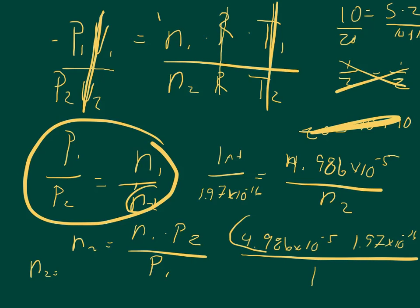And so when I solved for it, I got that the N2 equals 9.841 times 10 to the negative 21st power moles. That's the answer.